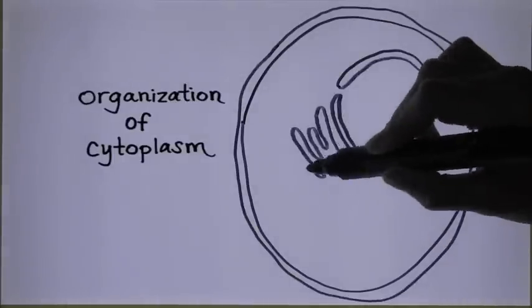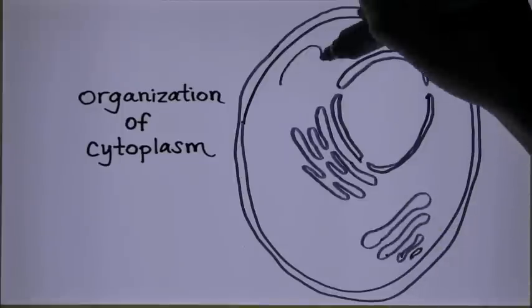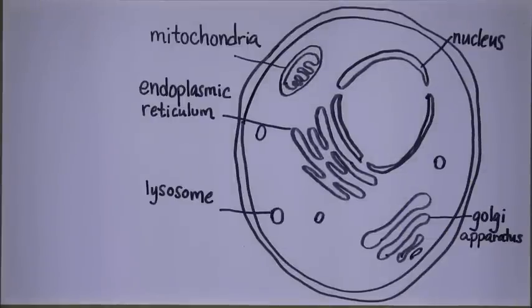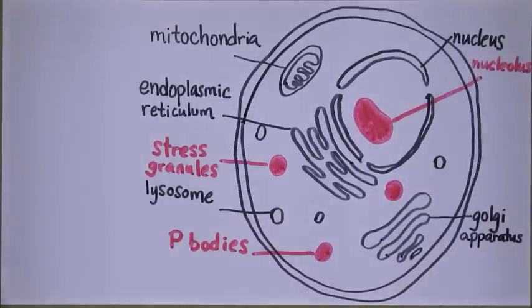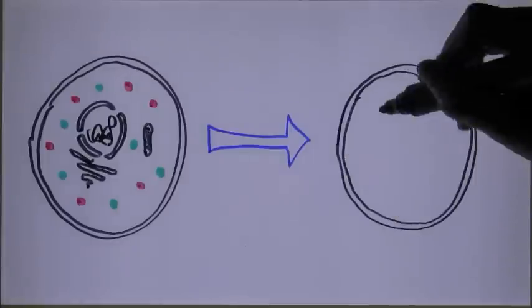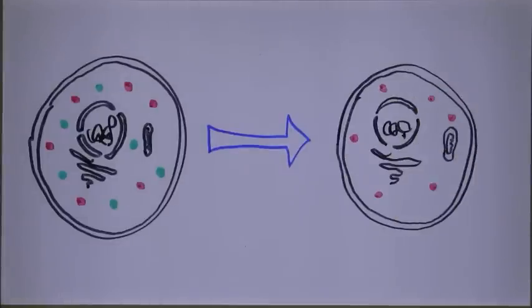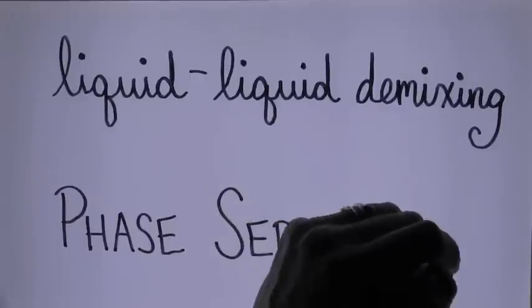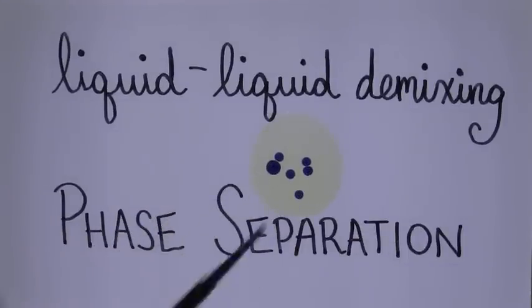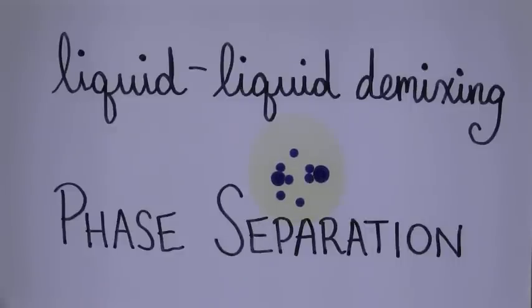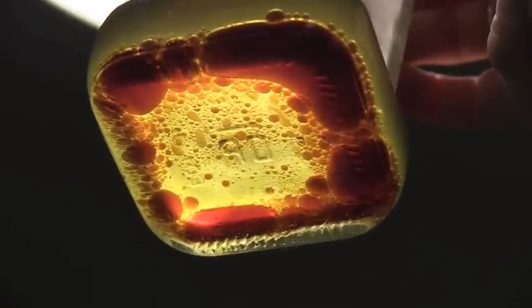My lab studies how the cytoplasm is organised. In our biology textbooks, we learn about organelles that are surrounded by membranes, but there are many compartments in the cell without membranes. These compartments are a way for cells to concentrate components for a wide variety of biochemical reactions. And it turns out they form through a process of liquid-liquid demixing or phase separation. We can think of this much like how oil and vinegar separate from each other in a vinaigrette.